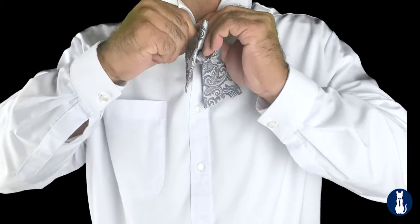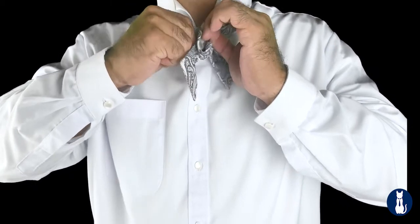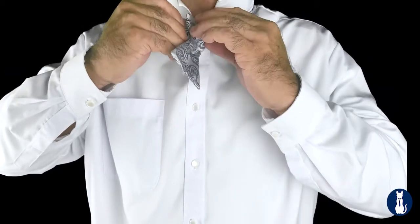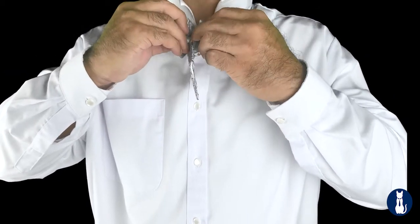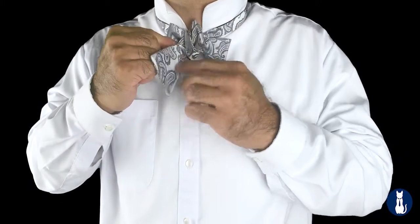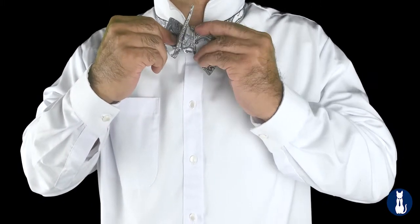Once the bottom corner is through, both hands can now be used to move the rest of the width of the fold through. This is the whole width of the fold through now, and you have folds on both sides—this one that just got through and the fold on the right.